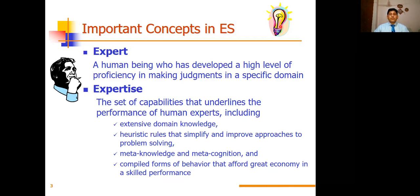Another component is meta-knowledge and meta-cognition. Meta-knowledge is the knowledge about the knowledge, just as meta-data is data about data. Expertise also includes compiled forms of behavior that allow for great economy and skilled performance. How a person performs is based on their skills; expert expertise shows performance which is definitely a skill.